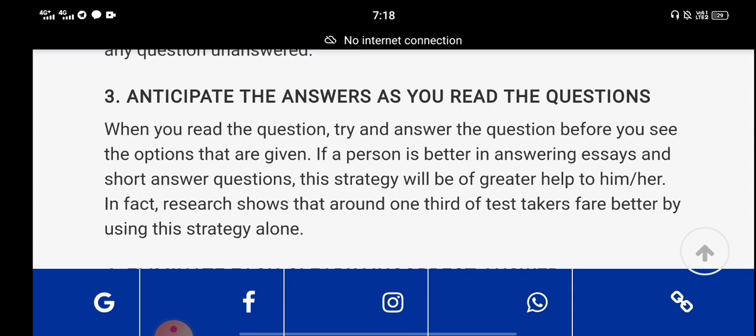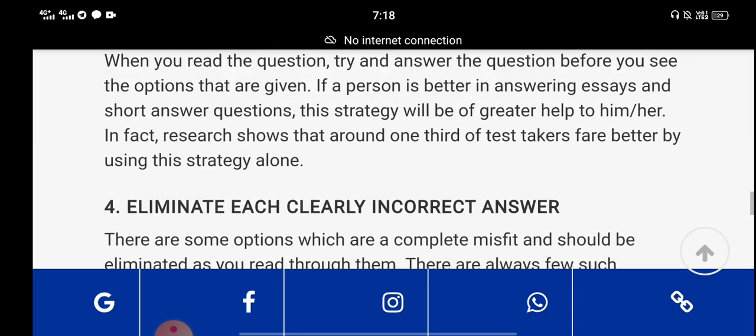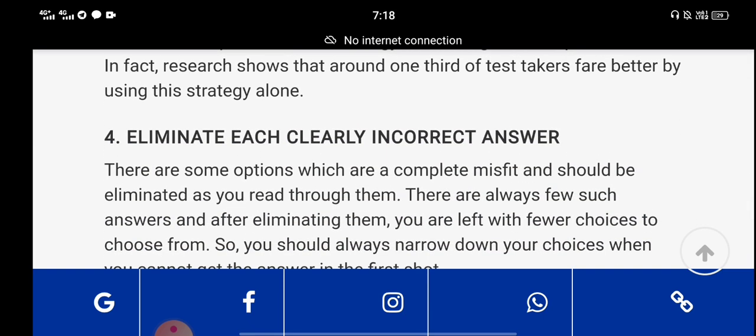Eliminate each clearly incorrect answer. Do not eliminate the important answers - only eliminate the ones that are clearly wrong. Then you have to choose from the remaining answers.